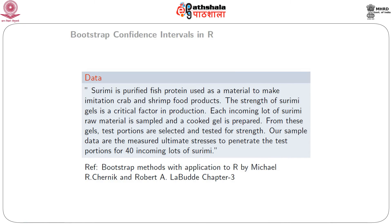The dataset is called the Surimi data. Surimi is purified fish protein used as a material to make imitation crab and shrimp food products. The strength of Surimi gel is a critical factor in production. Each incoming lot of Surimi raw material is sampled and a cooked gel is prepared, from which test portions are selected and tested for strength.